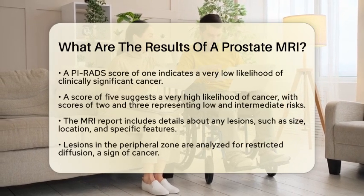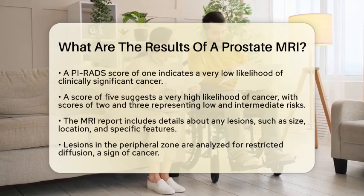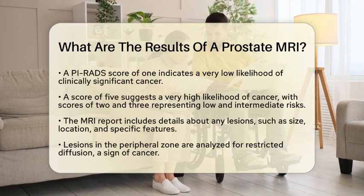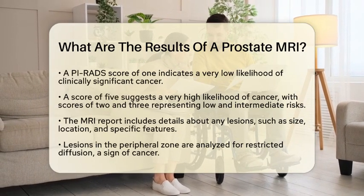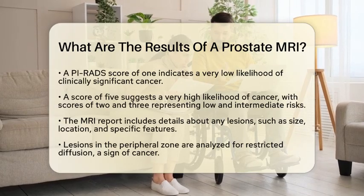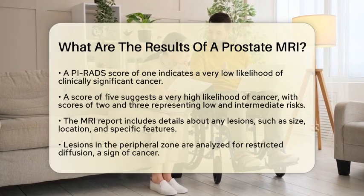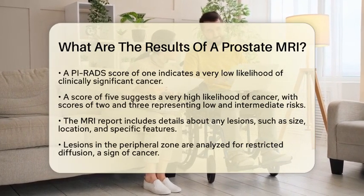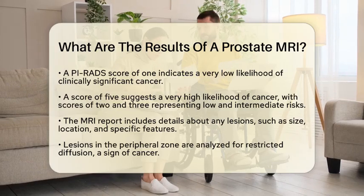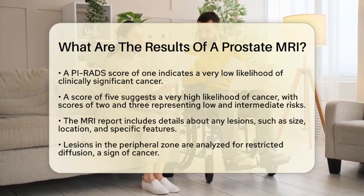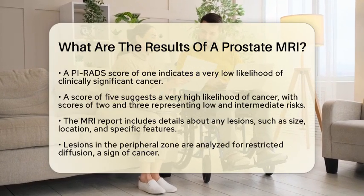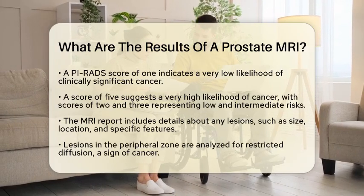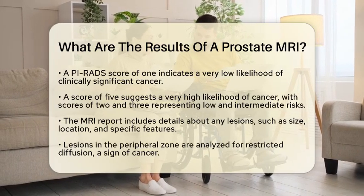In addition to the PIRADS score, the MRI report details the characteristics of any lesions found. This includes their size, location, and specific features. For instance, lesions located in the peripheral zone of the prostate, where most cancers arise, are analyzed for restricted diffusion, which is a hallmark of cancer on MRI.